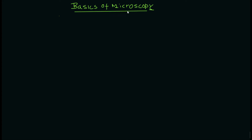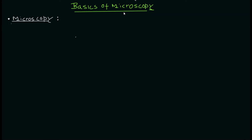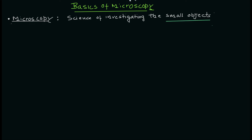The title is 'Basics of Microscopy.' So what is microscopy? Microscopy is not an instrument — it's a science, basically. It's a broad term. In the simplest term, it is the science of investigating small objects. This includes understanding the concept, the mechanism, the principle, and all the techniques we use with microscopes.